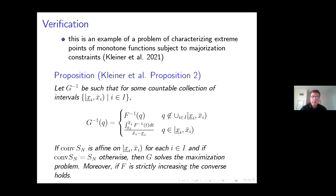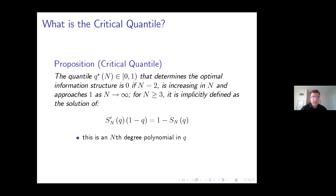Our rewriting leads us to a linear function subject to a majorization constraint. There's a verification result in the paper by Klein, Moldova, and Strassen that tells us that the extreme points we have been looking for are in fact the candidates, and under the conditions met in the current problem, are in fact the unique candidates for the optimum. That closes the argument for the characterization and uniqueness of the optimal symmetric information structure.